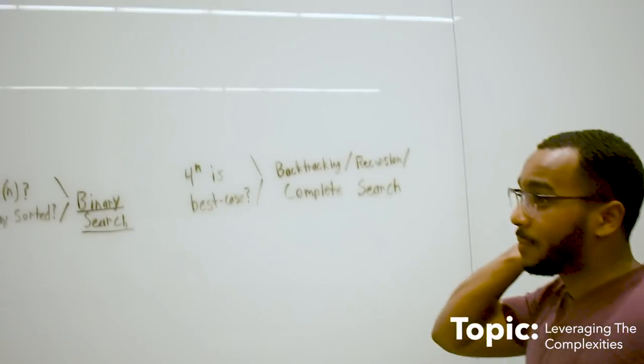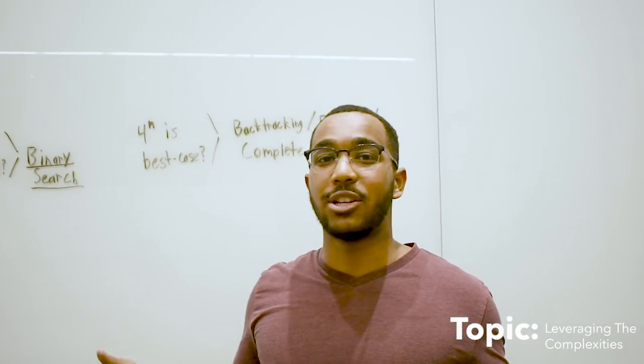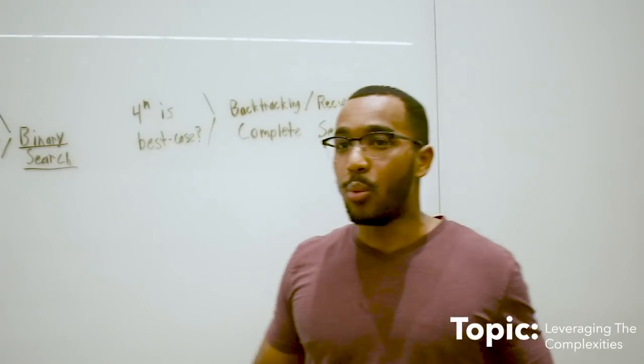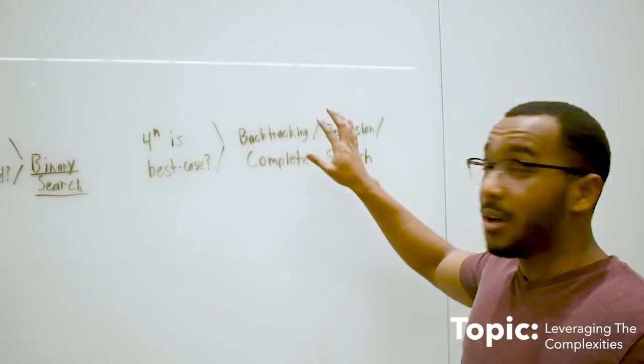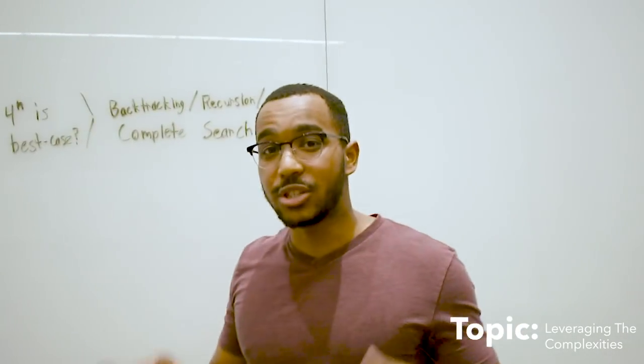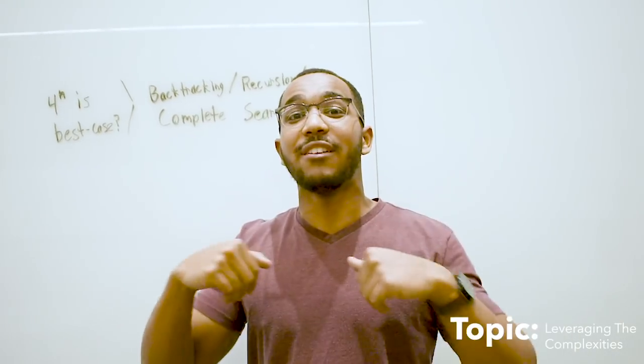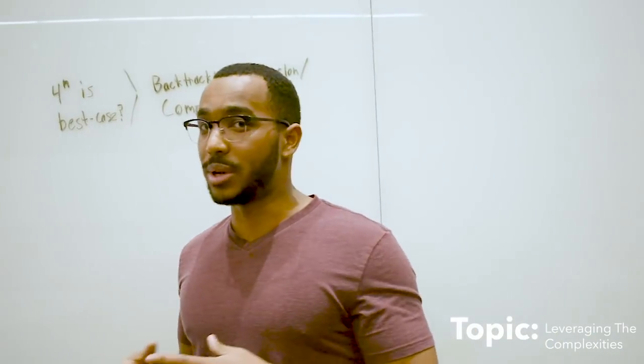If you say that I have no idea how to do this problem, it's going to be exponential in time, they tell you yes, it's going to be four to the n best case, what do you instantly know? You know that the most optimal solution is going to be something like backtracking, recursion, complete search, something where you're exhausting many possibilities and making many forks at each layer of the call.